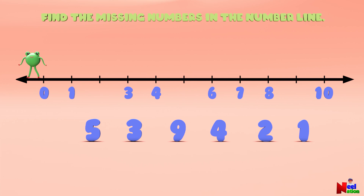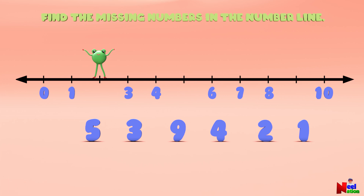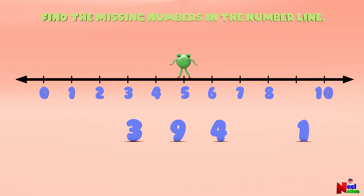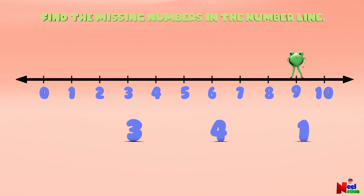Can you find the missing numbers in the number line? Let's begin with zero, then one. Oh, the number after one is missing — what comes after number one? Number two! Yes, you are right. Then three, then four. Oh, the number after four is missing — what comes after four? Five! Yes, you got it. Then six, seven, then eight. The number after eight is missing — what comes after eight? Number nine, you're right!